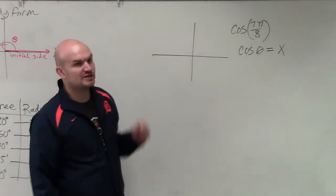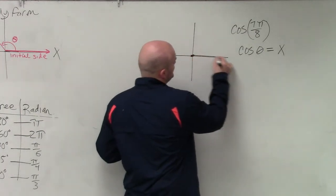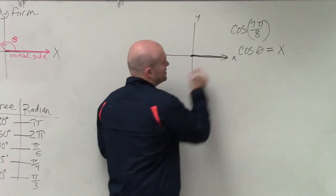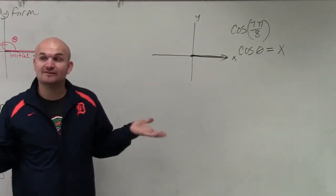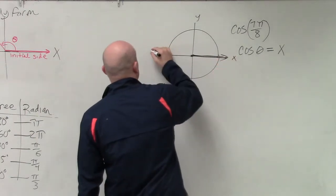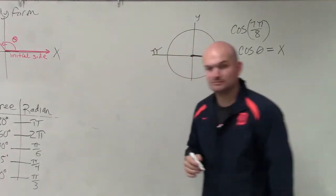So first of all, we need to graph 7π/8. We know here is the initial side because we're in standard form. We have an x and a y-axis. That is our initial side. Now, we need to rotate 7π/8. So if we think about that in terms of a circle, we know that all the way around a circle is π, correct?